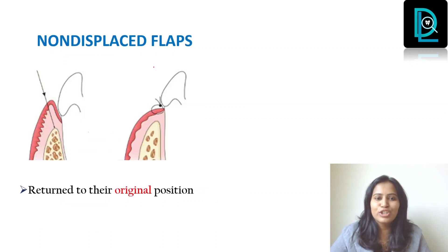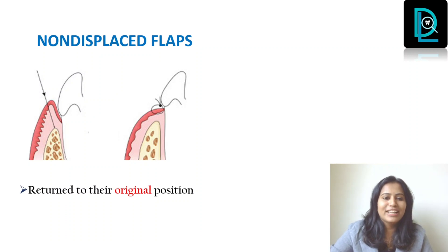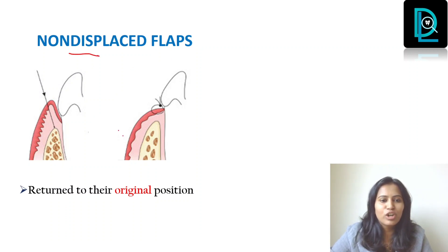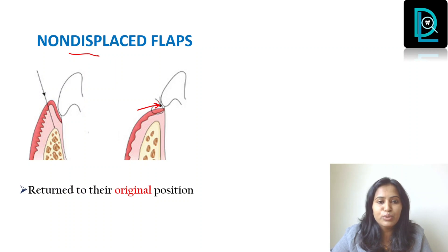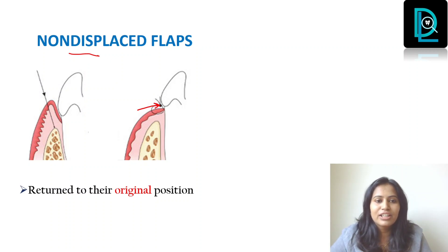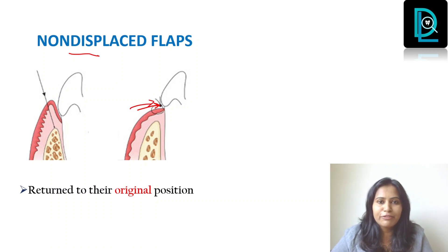Now the next one is your non-displaced flap. As the name suggests, it is not displaced — it is returned to its original position. You place an incision, reflect the flap, do all the procedures, and afterwards return it to the original position — back to that same junction. Examples include the modified Widman flap and the conventional flap.